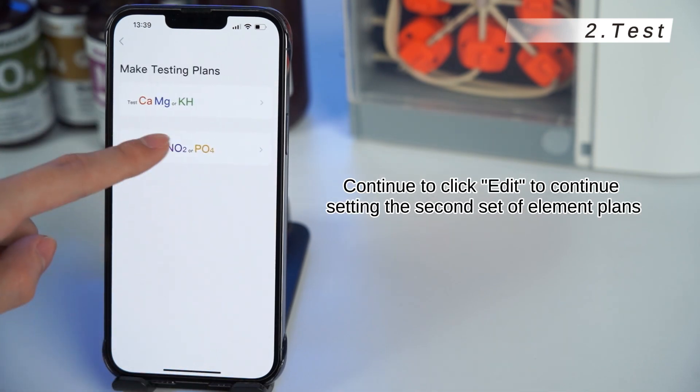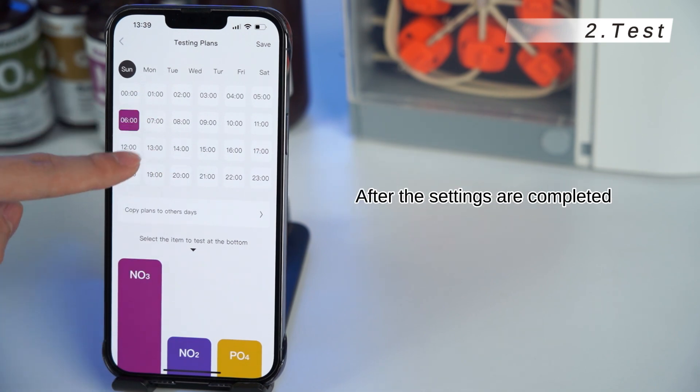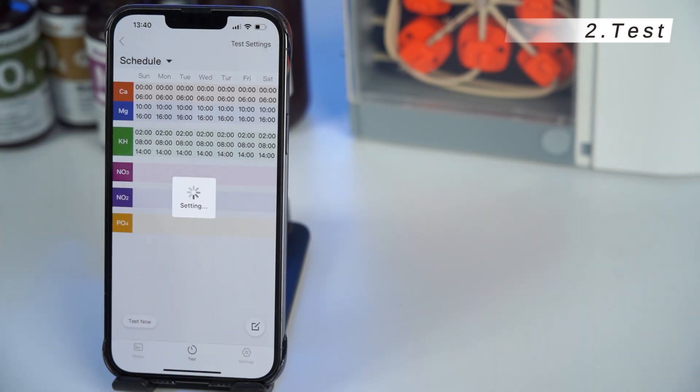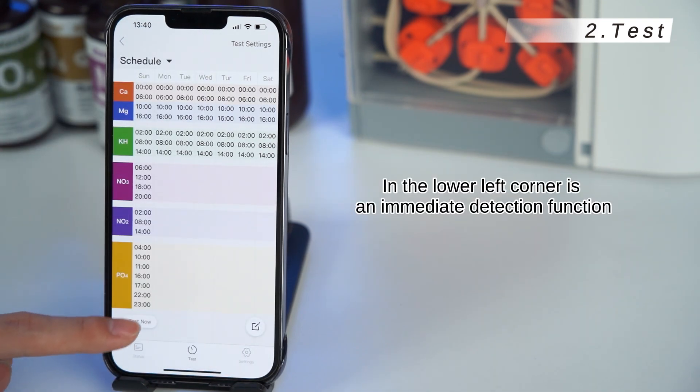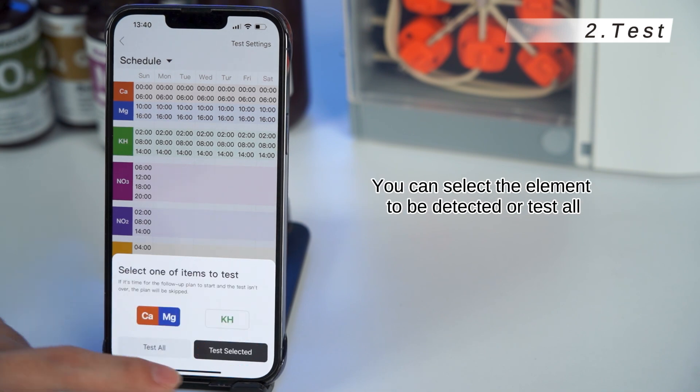Continue to click edit to continue setting the second set of element plans. After the settings are completed, click save. In the lower left corner is an immediate detection function. You can select the element to be detected or test all.